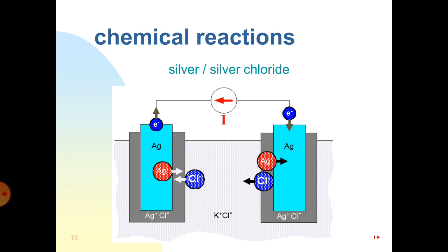This slide shows the chemical reaction of the silver-silver chloride electrode. Here we have two AgCl metals — that is the silver-silver chloride metal — with a semi-permeable membrane in between. One metal has positive ions and the other has negative ions. When current is applied, the movement of electrons and holes produces the current. Potassium chloride (K⁺Cl⁻) acts as the interface, and potassium chloride solution fills the electrode.